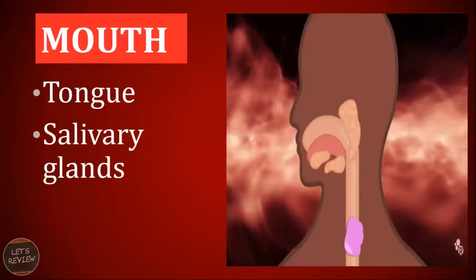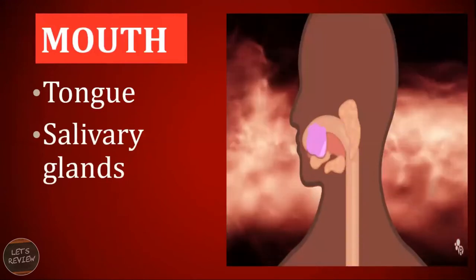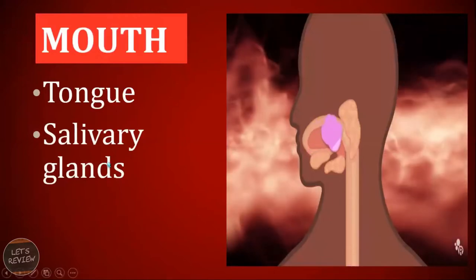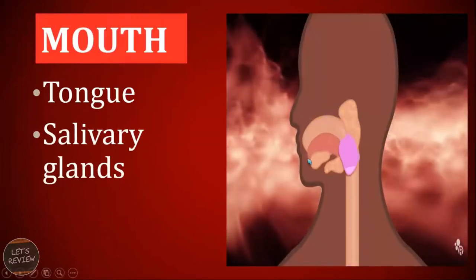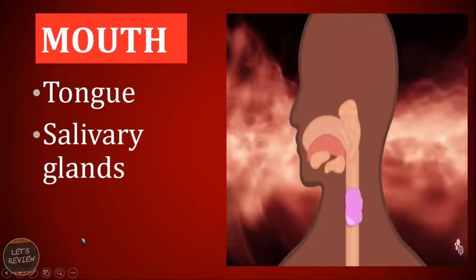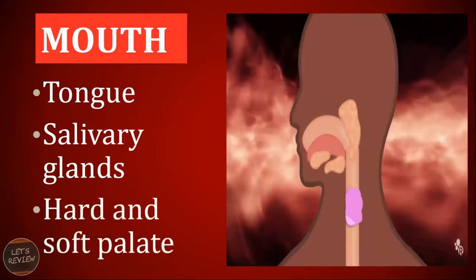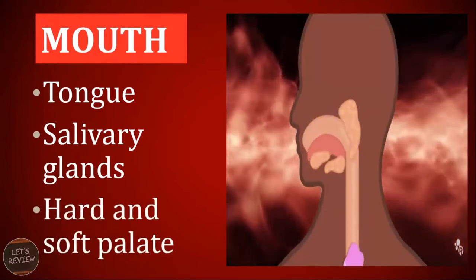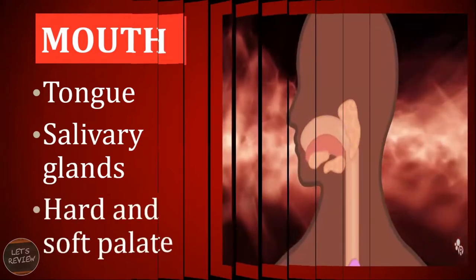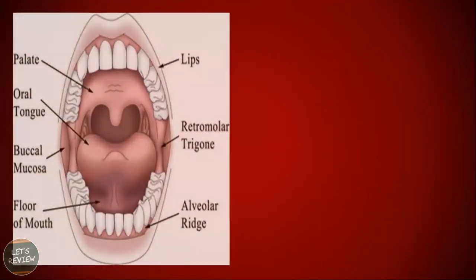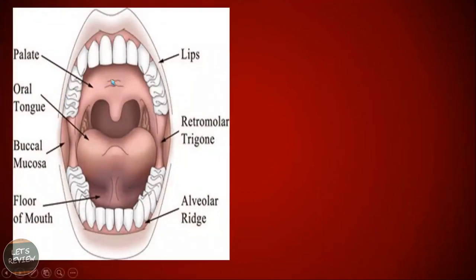The tongue pushes the food towards your teeth for you to be able to chew it and to facilitate swallowing. The salivary glands — the sublingual, the parotid — are the glands that produce saliva to masticate the food so you can easily swallow it. We also have the hard and soft palate found in your mouth, as well as the floor of the mouth, the alveolar region, and the retromolar trigons — these are different parts you can see inside your mouth.